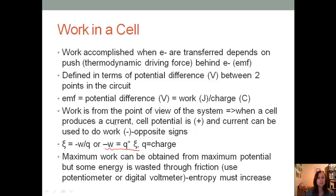The maximum work can be obtained from maximum potential, but some energy is always wasted through friction. This is one of the reasons why we use a potentiometer or a digital voltmeter, because that's going to reduce that. We want entropy, which is disorder, so we need to spread out the energy. Because entropy is favored and we're spreading out energy, some of it's going to be lost through friction.